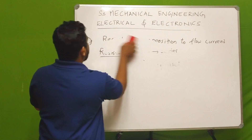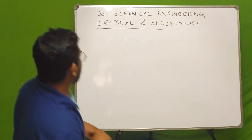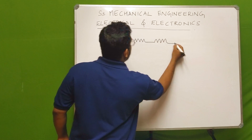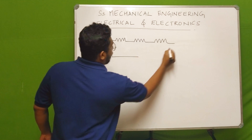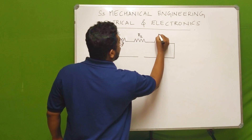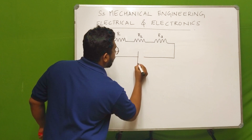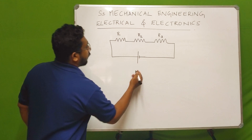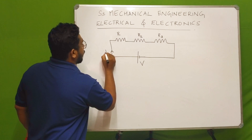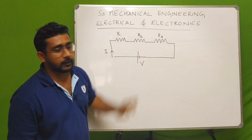We have three resistances R1, R2, R3 — those are the names of the main resistances. We have voltage represented by the EMF symbol V, and we have current represented by I. R1, R2, R3 are the main resistances.